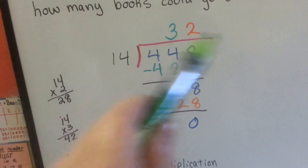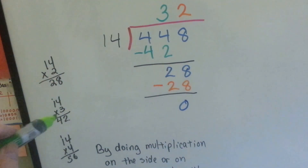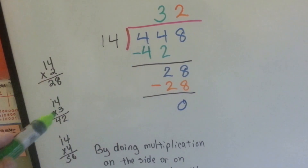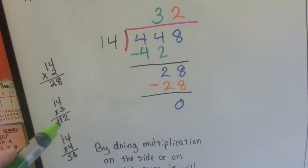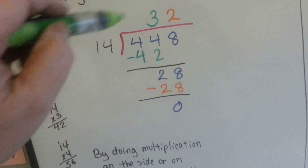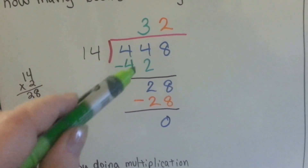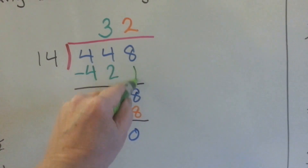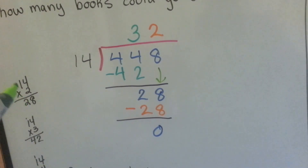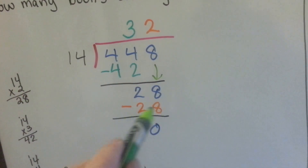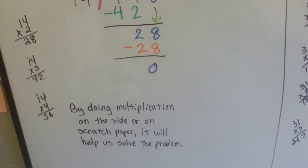That way, when I ask how many times can 14 go into 4 — well, none. Can it go into 44? I look over on the side. You can't go over the number; it's got to fit into the 44. So we're going to be at 42, so I use 3. I put the 3 there. I already know the multiplication from the side work. I write 42 there and do the subtraction — 44 minus 42 is 2. Then the 8 comes down, and now I've got 14 going into 28, which is 2 from my multiplication on the side. I put the 2 up there, write 28, subtract, and I've got 0. By doing multiplication on the side, it helps us solve the problem quicker.